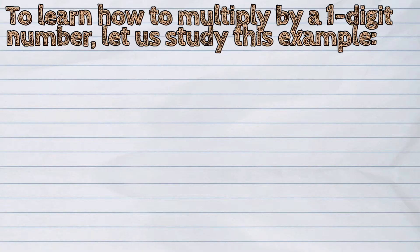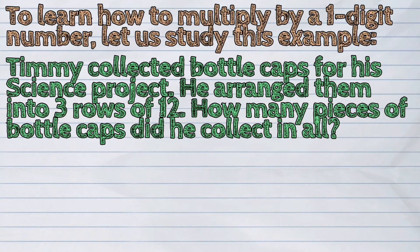To learn how to multiply by a one-digit number, let us study this example. Timmy collected bottle caps for his science project. He arranged them into 3 rows of 12. How many pieces of bottle caps did he collect in all?